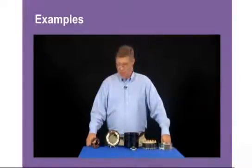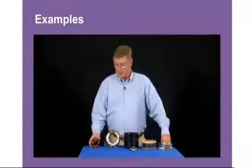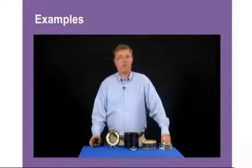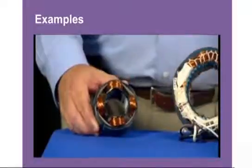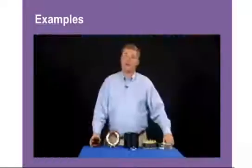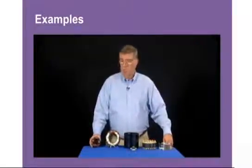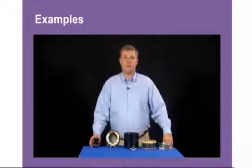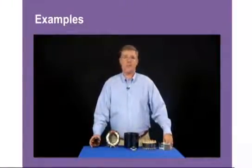The first type is a shaded pole motor. This motor has one distinct coil or run winding, and there are shading bands or copper bands that are forced through the stator that help fix the rotation. This is the least efficient motor in the HVACR market — a shaded pole motor is between 30 and 35 percent efficient.